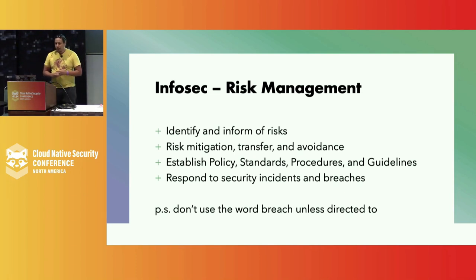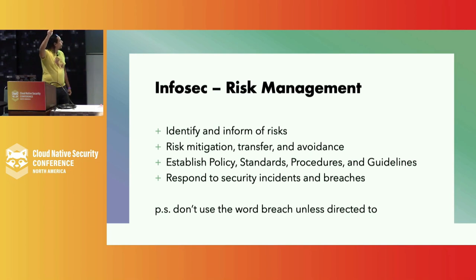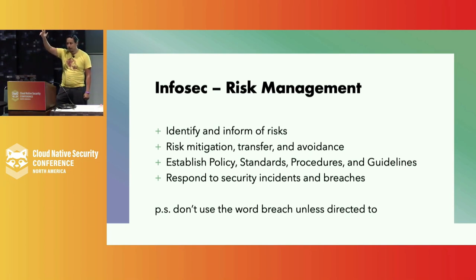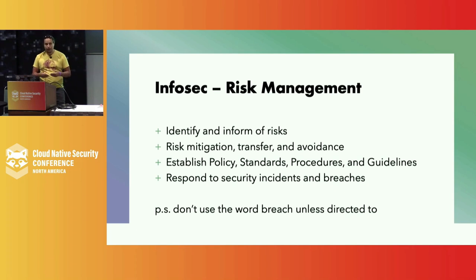InfoSec also likes to establish policy, standards, procedures, and guidelines. Policy is something like: all data at rest must be encrypted. Standards would be: we use AES. Procedures would be: we use BitLocker in this specific way to implement AES for encryption. And then guidelines are things that are good advice to follow, but not strictly required — though there may be implications if you don't.